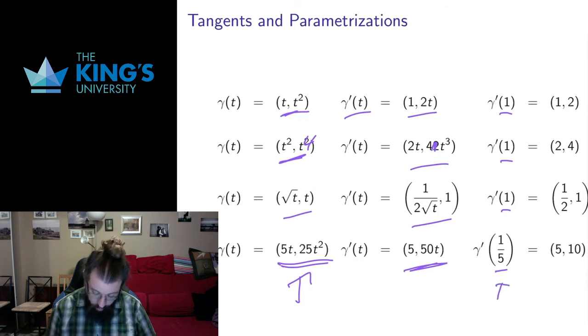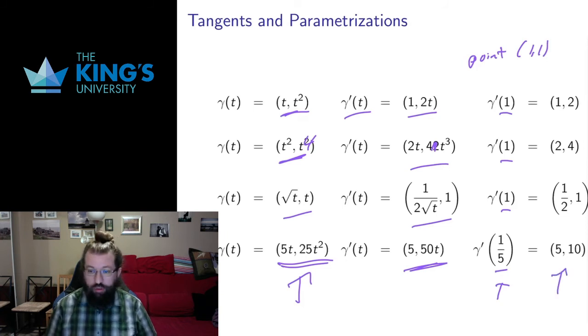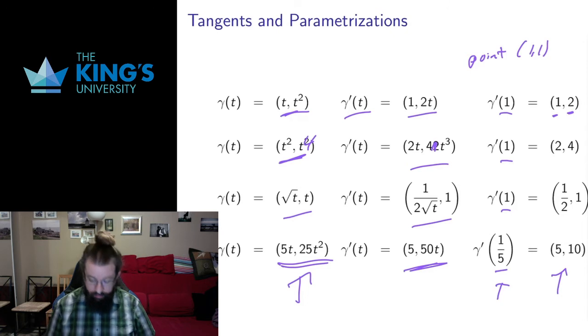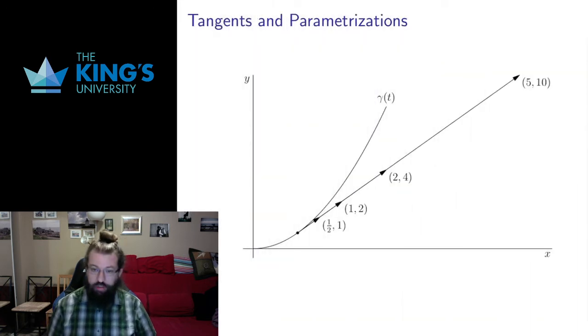And if we evaluate them going through the point one one then we get vectors that are all in the same direction. Each of these vectors has a y coordinate which is twice the x coordinate. But they have different lengths. And I can visualize that by having this parabola here.